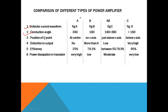Position of Q-point: for class A it is at the center; for class B it is on the X-axis; for class AB it is just above the X-axis; and for class C it is below the X-axis. Distortion in the output: in class A, since conduction angle is 360 degrees, there is no distortion. For class B, conduction angle is 180 degrees, so more distortion — we get the output waveform only for a half cycle. For class AB it is low — we get a waveform more than B but less than A, since conduction angle is between 180 and 360. For class C, distortion is very high since the conduction angle is less than 180 degrees.